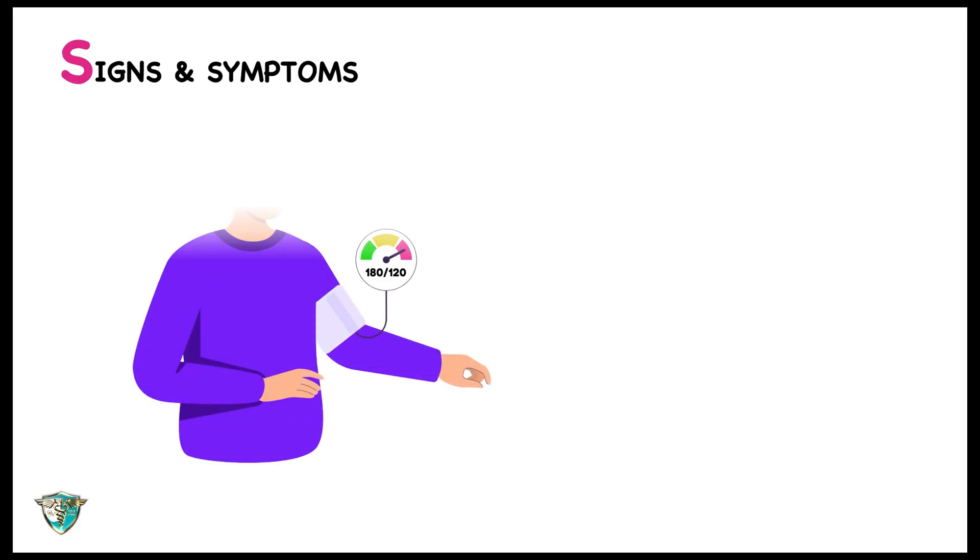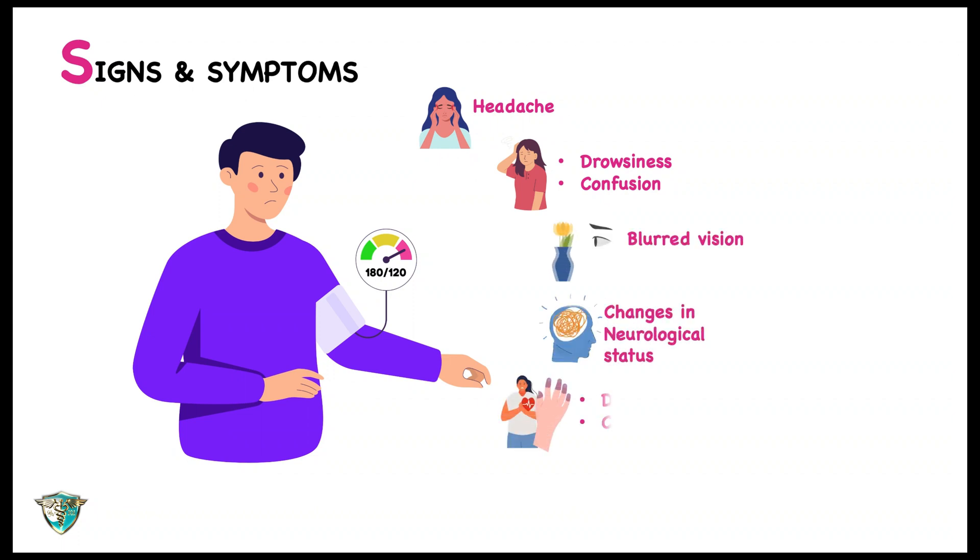In addition to elevated blood pressure, a patient experiencing a hypertensive crisis may present symptoms such as headache, drowsiness, confusion, blurred vision, changes in neurological status, dyspnea, cyanosis, and seizures.